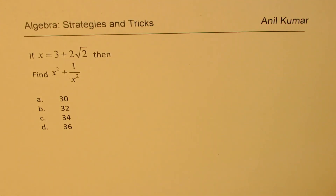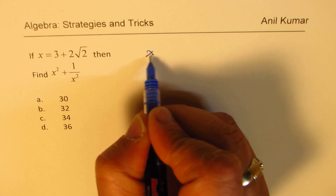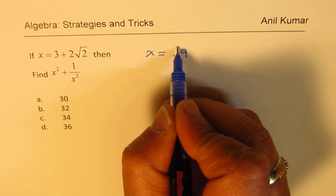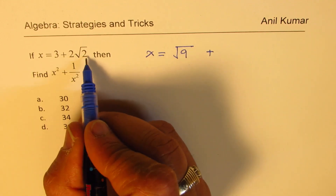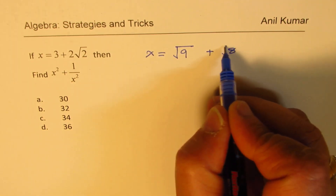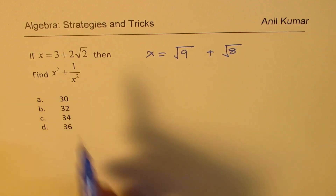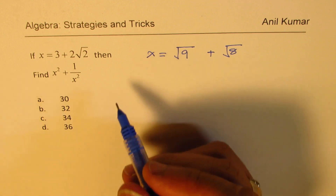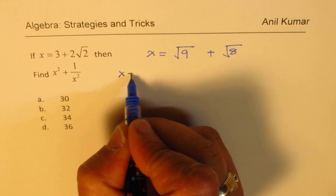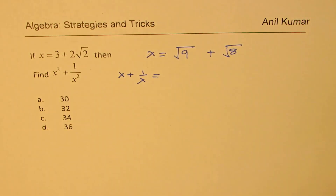Here is a practice question. Is the difference 1? Think like this: 3 is square root of 9, and 2 taken inside becomes square root of 4 times 2, which is square root of 8. So the values inside the square roots are 9 and 8 — a difference of 1. This time we need to find x squared plus 1 over x squared. First, we find x plus 1 over x, which is twice the first term — that is 6 in this case.